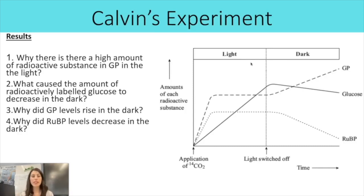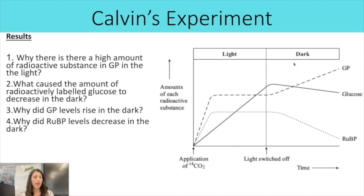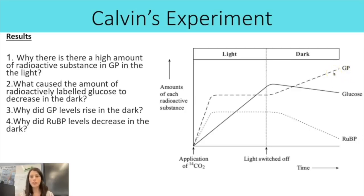Why did radioactively labeled glucose decrease in the dark? In each turn of the Calvin cycle, one carbon from TP goes toward making a hexose sugar like glucose. If glucose is decreasing, TP must be decreasing. When it goes dark, the light-dependent reactions stop, so no more reduced NADP or ATP is produced — and those are required to reduce GP into TP. So GP is not being reduced to TP, causing a build-up of GP, a decrease in TP, and therefore a decrease in glucose.